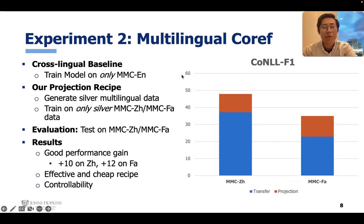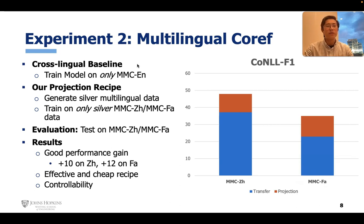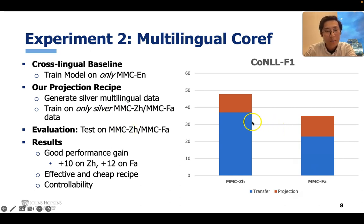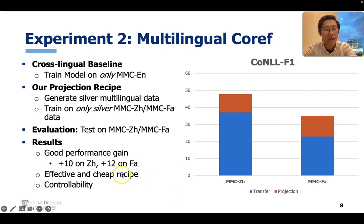We also want to check whether our recipe of multilingual projection will be a good solution. We simulate the scenario where you only have English annotation but still want to get a correct model in other languages. The first choice is the baseline, which is cross-lingual transfer — you train the model only on MMC English and test on Chinese and Farsi. In our proposed recipe, you generate the silver multilingual data first and then train on only silver Chinese or Farsi data for testing. According to the results, our proposed recipe achieves significant performance gains over the baseline. This recipe is effective and cheap to implement with no extra annotation, and it also allows better controllability — you can manipulate the projected data through human correction or heuristics.